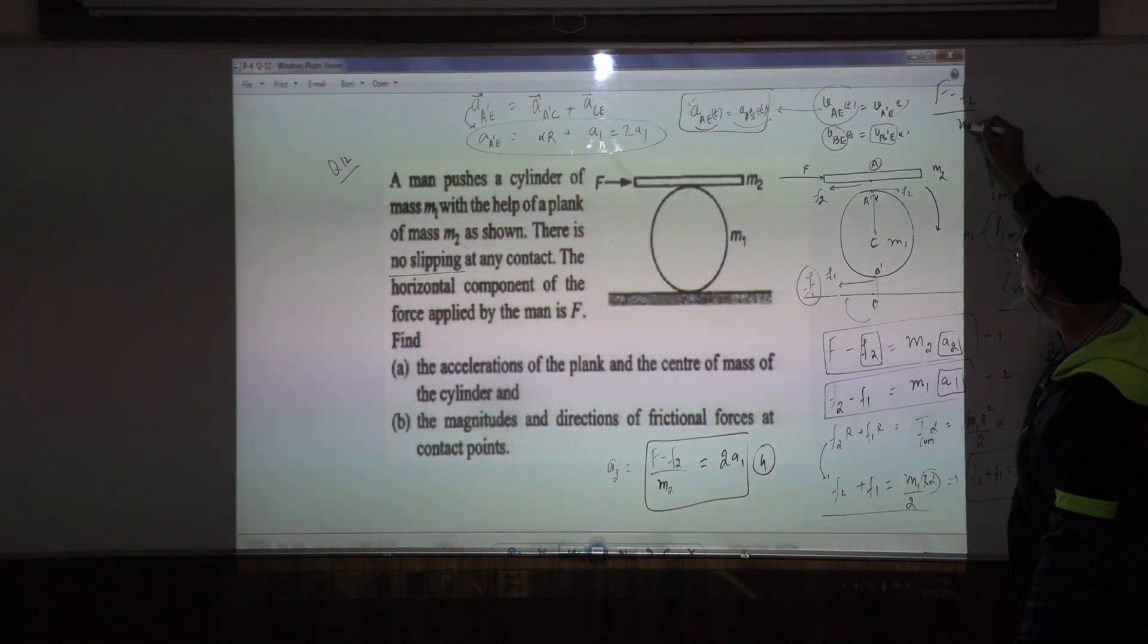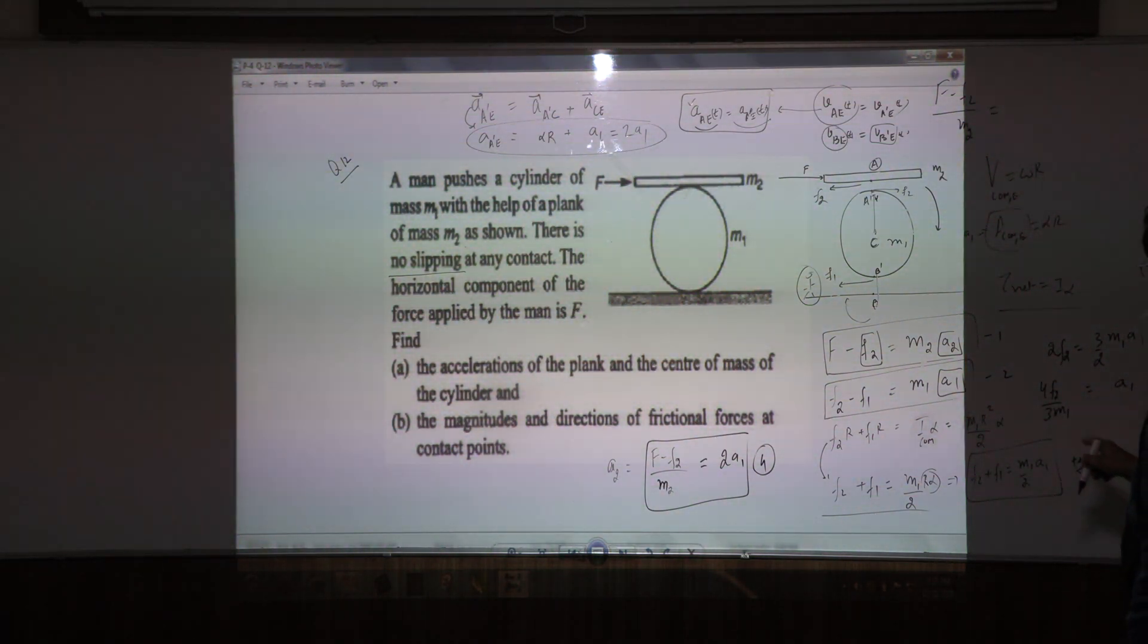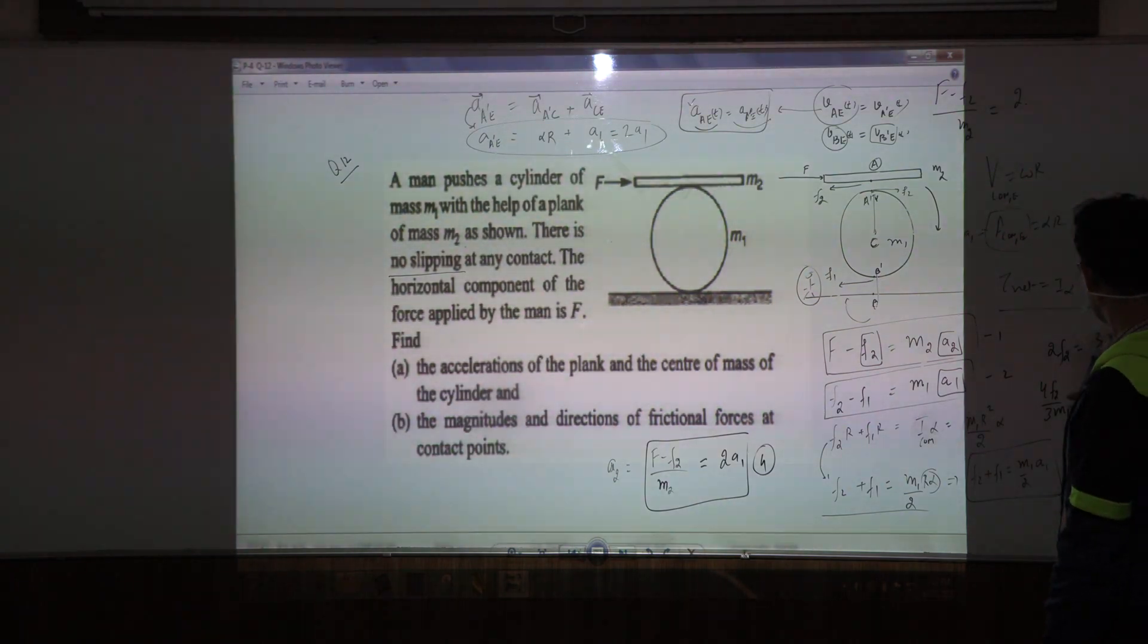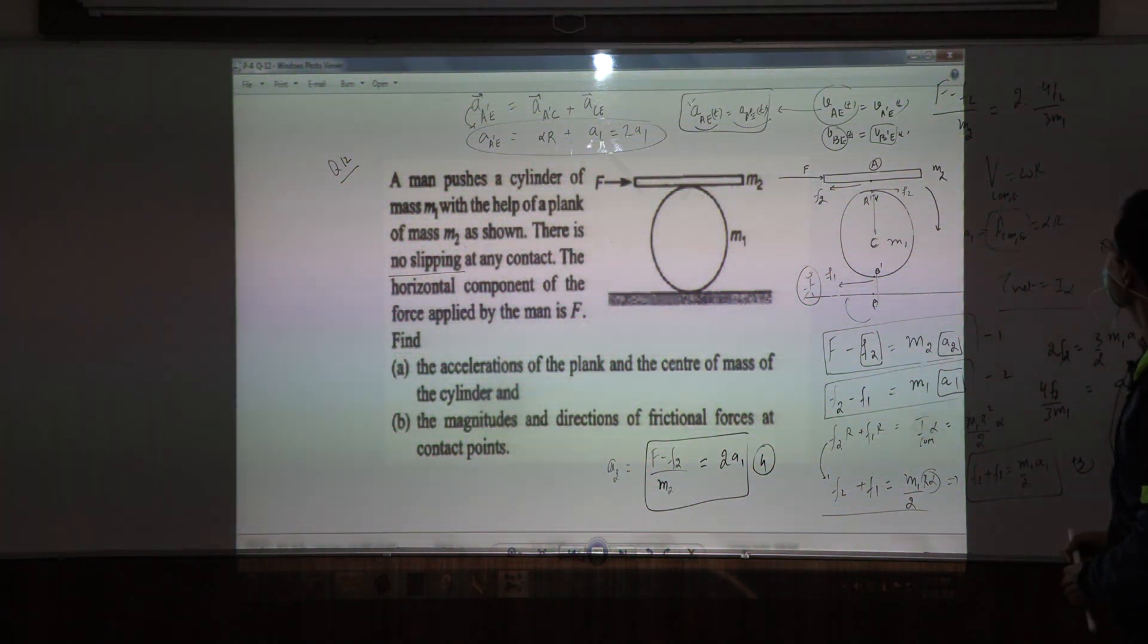F minus F2 upon M2 F2 equals twice of this, 4F2 divided by 3M1. So this should give us the value of F2. Fine.